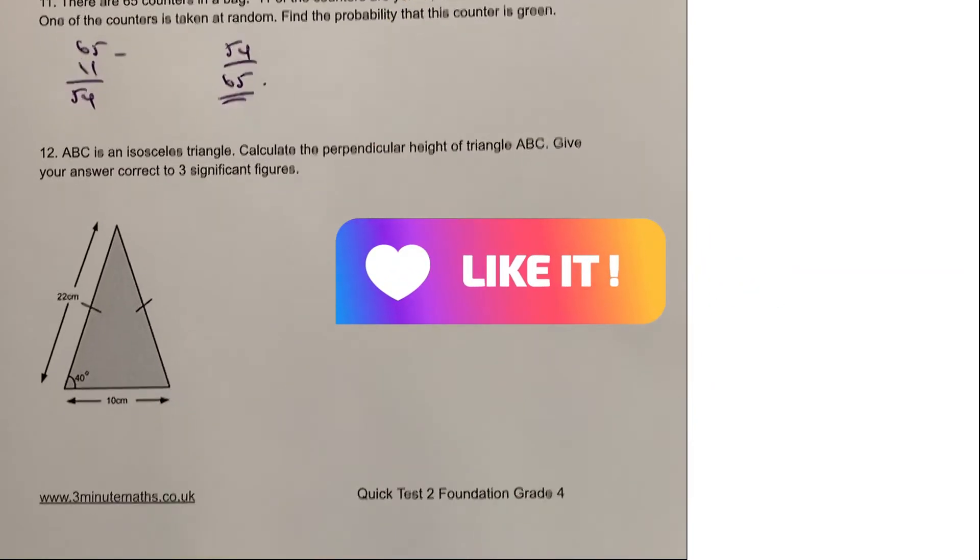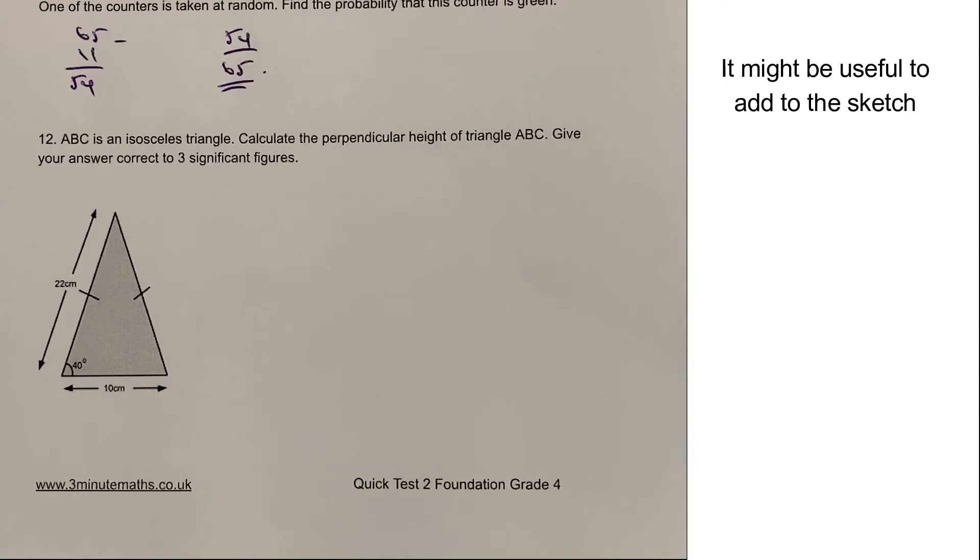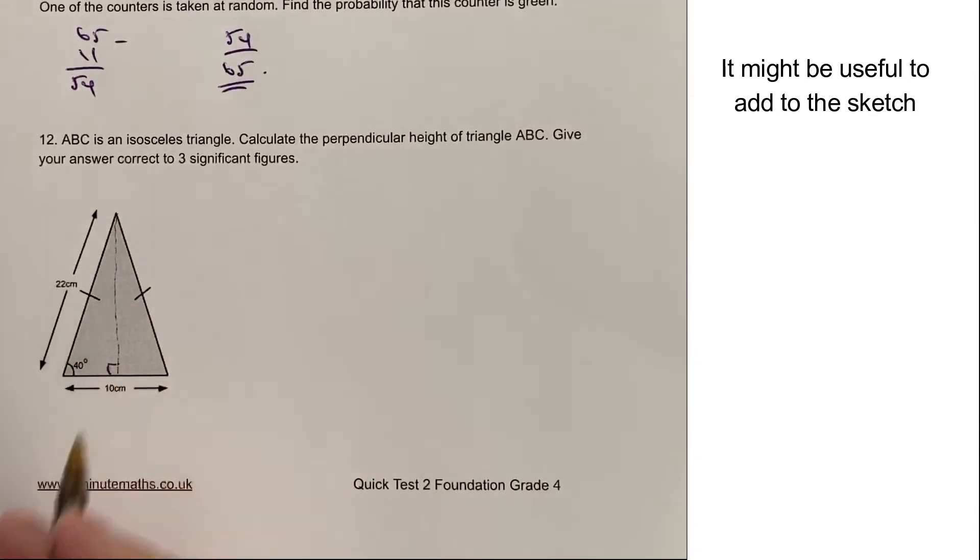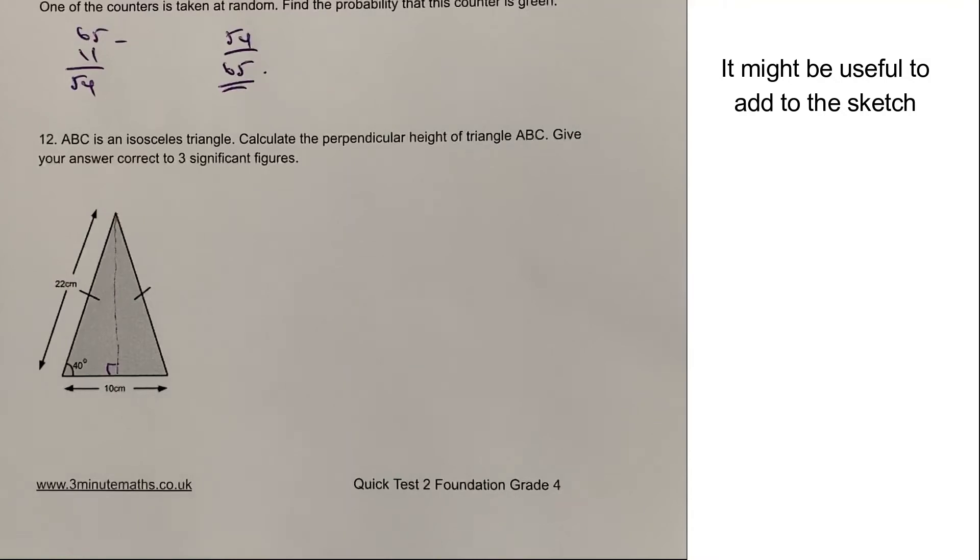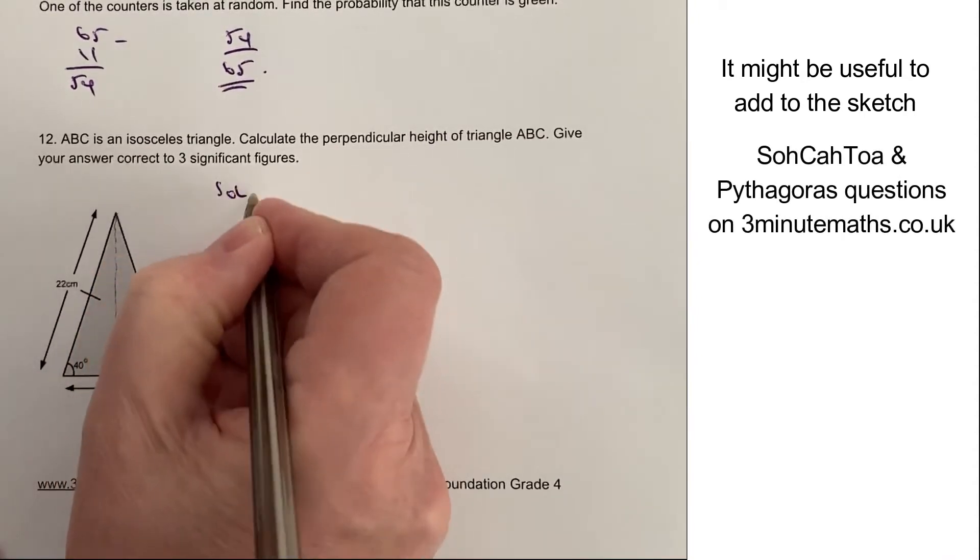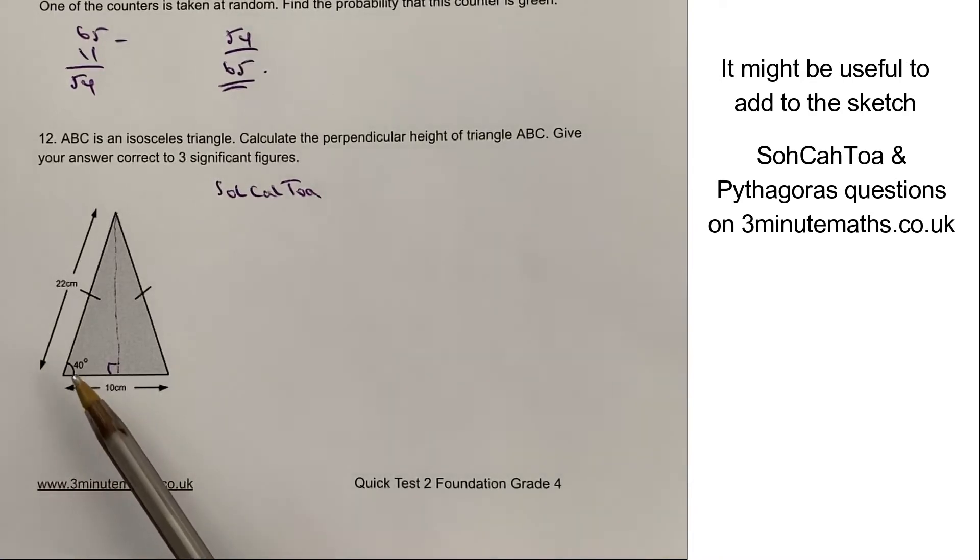Let's have a look then finally at question number 12, or finally on this sheet, question number 12, which is ABC is an isosceles. Please calculate the perpendicular height. So by perpendicular height, what we basically mean is this height here, where this is 90 degrees. Now, there's a couple of ways of doing this. You could use a particular technique, which some people would know as SOHCAHTOA. And it's interesting that they've actually given you this 40 degrees, so therefore, you could use one of those ratios. However,